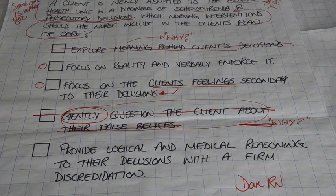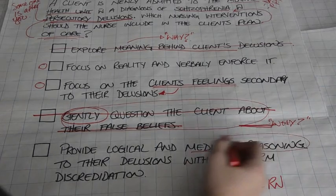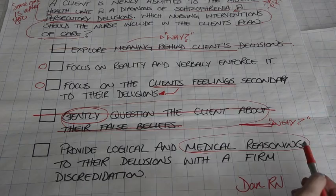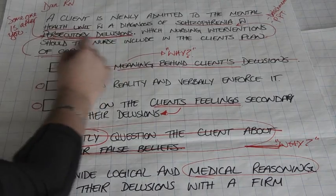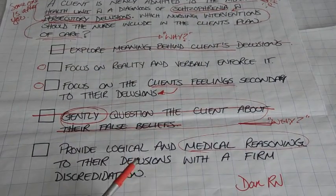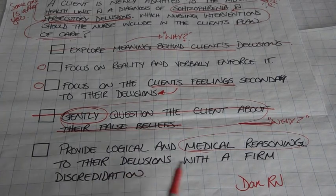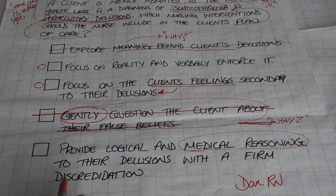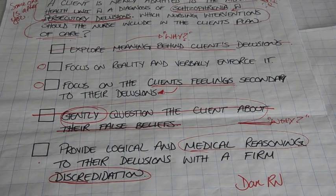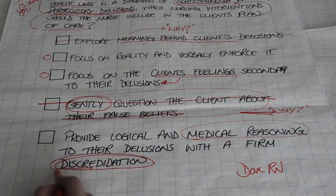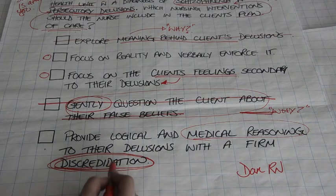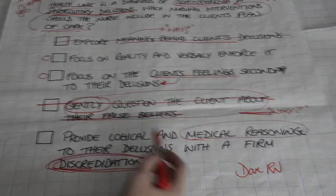The last answer choice reads: provide logical and medical reasoning to their delusions with a firm discreditation. We're providing medical reasoning and giving the client knowledge about their condition. However, they're currently having delusions and have schizophrenia — will the client be able to understand what we're telling them? And why are we discrediting their delusions? We never discredit what the client says or how the client feels. The word 'discreditation' alone tells you this answer choice is wrong, so we eliminate it.